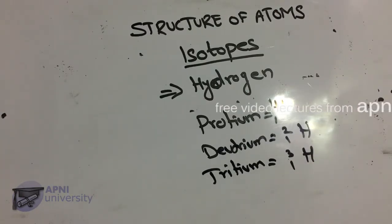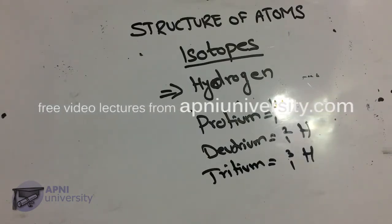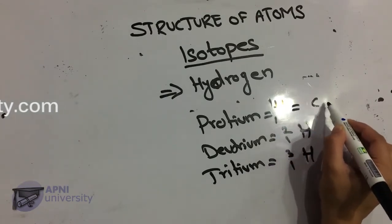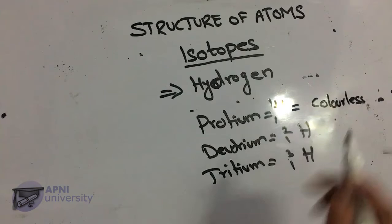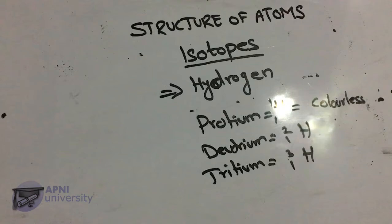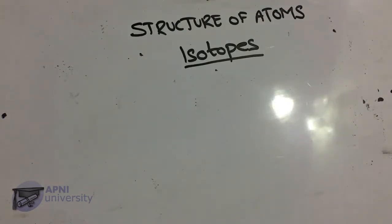Hydrogen-1 (protium) has only one proton; adding a neutron doubles its mass. Properties of protium: naturally occurring hydrogen, colorless, odorless and tasteless gas. It is insoluble in water and is a highly inflammable gas.